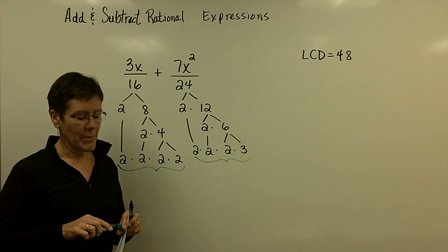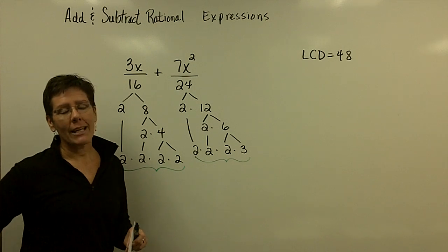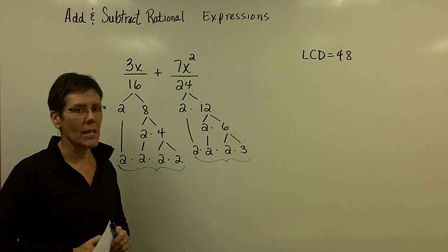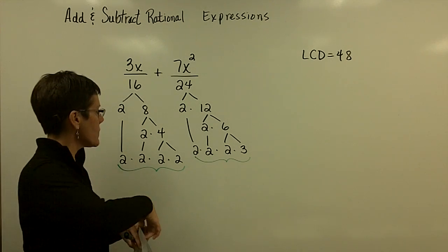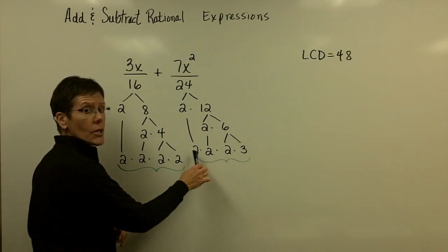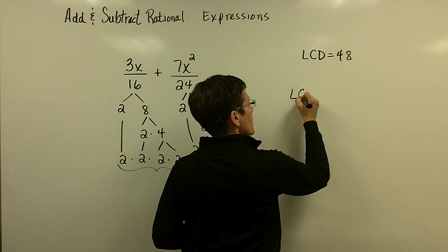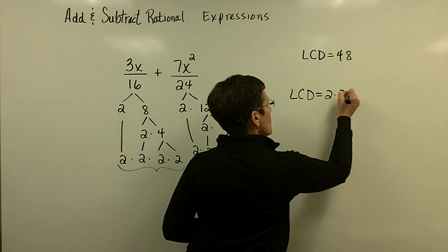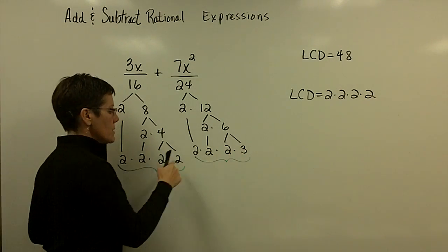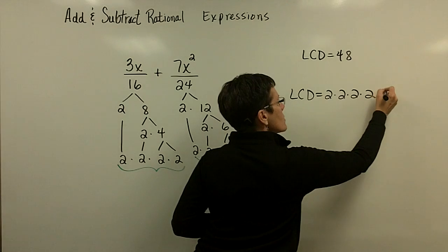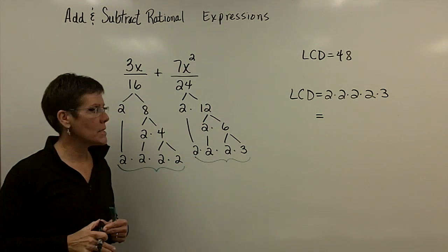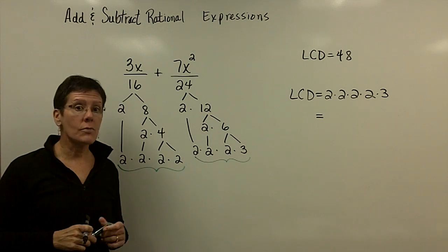To find a least common denominator, you take any factors that are common, the greatest number of times they occur in any one denominator. The 2's occur four times in 16 and three times in 24, so the LCD must include four 2's. The 3 occurs once in 24 and not at all in 16, but once is the greatest number of times, so 3 must be included. The product of all those numbers is 48.